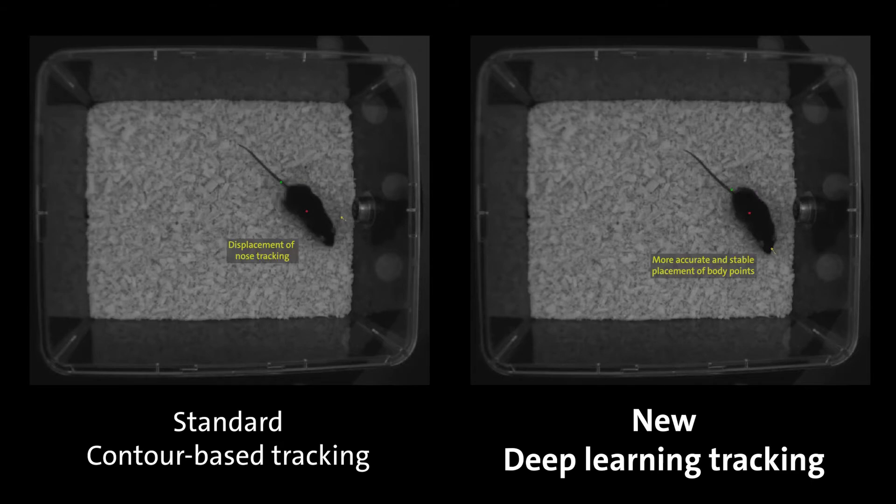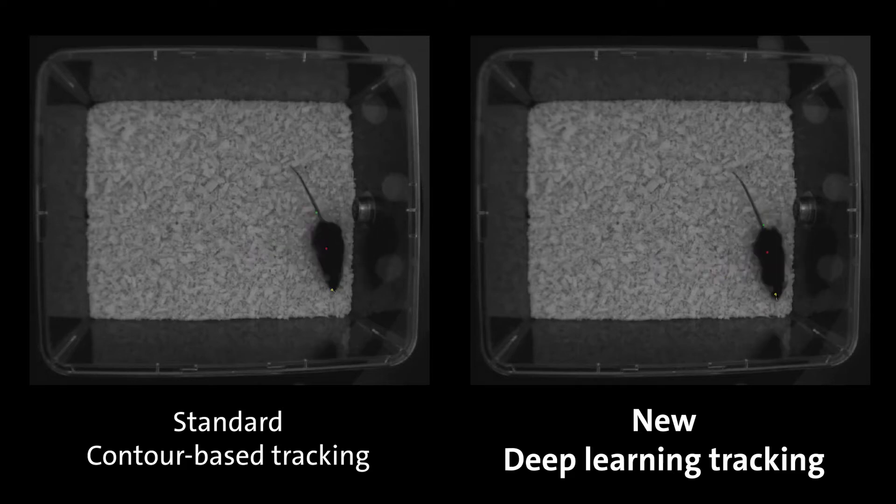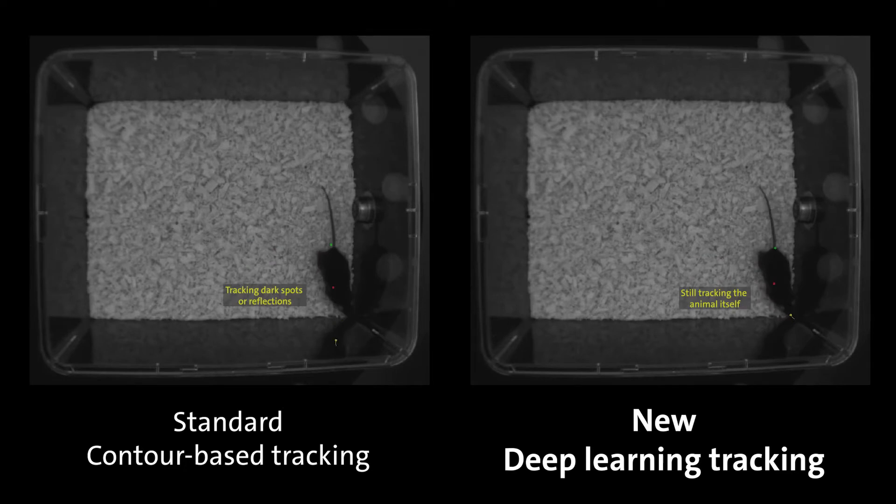In general, the new deep learning technology shows a more accurate placement of the body points while the animal is moving around. It also deals better with reflections or darker areas in the arena.